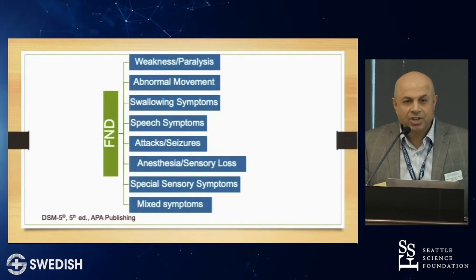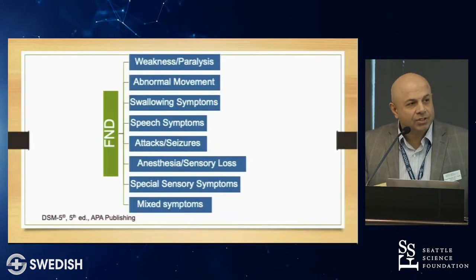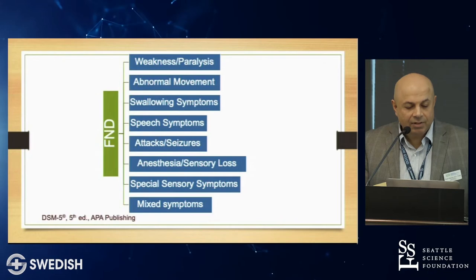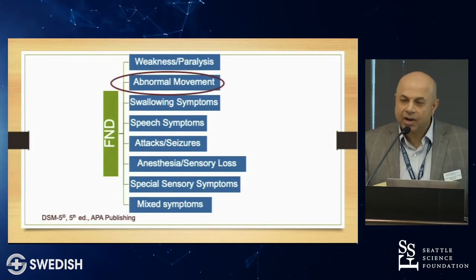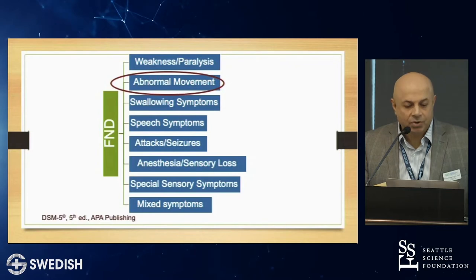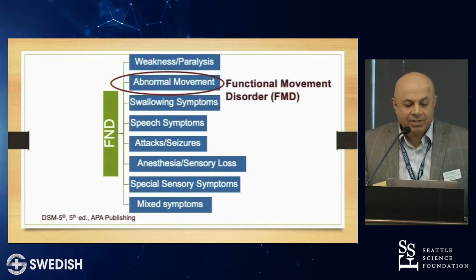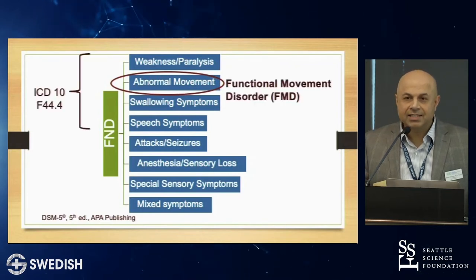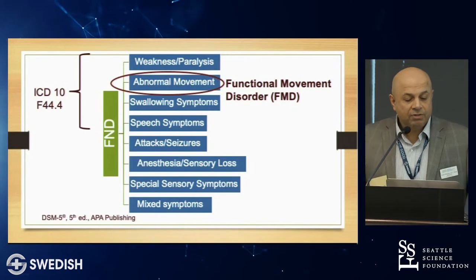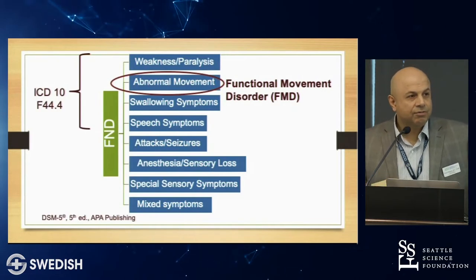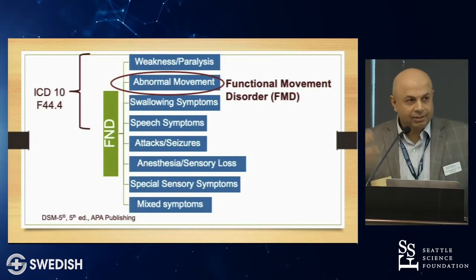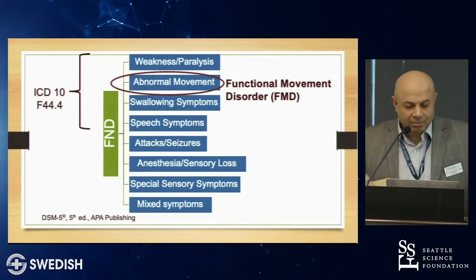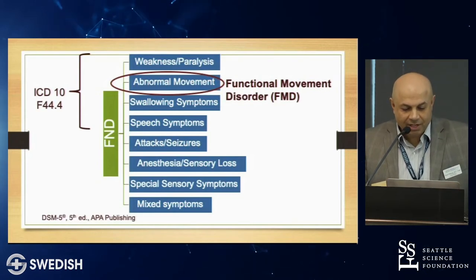These are the various subtypes of the functional neurological disorder category in DSM-5. The one I'll be focusing on is the abnormal movement category called functional movement disorders. There is an ICD-10 code for functional movement disorder — F44.4 — which is important for appropriate coding and billing.